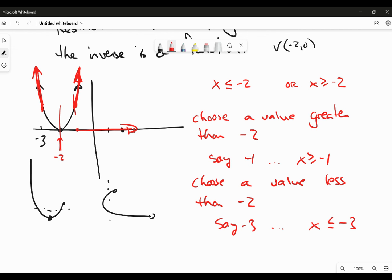So what I'm trying to do here is create a domain that doesn't include both sides of the vertex. Because when I find the inverse of that, I'm going to create something that simply won't be a function.